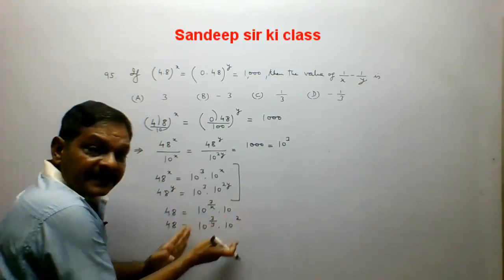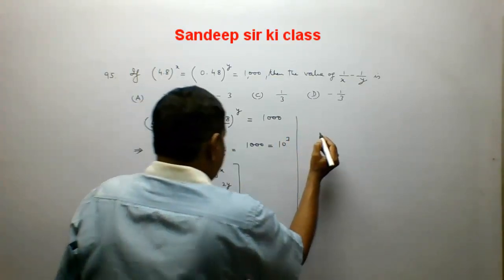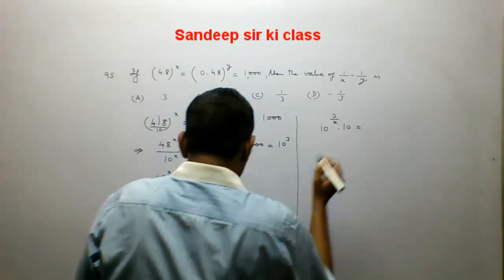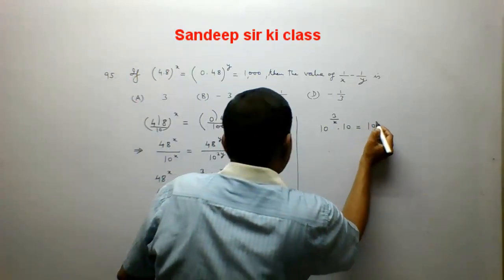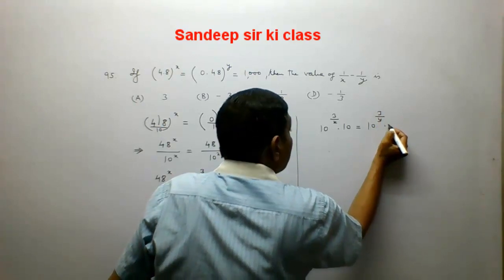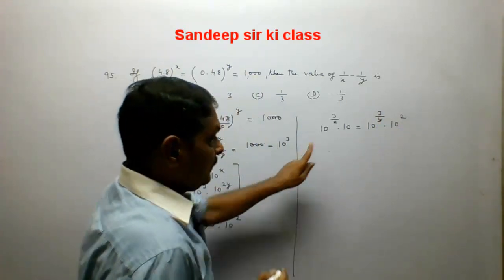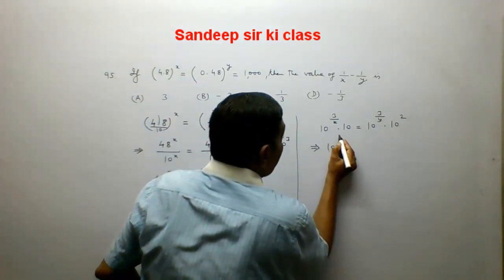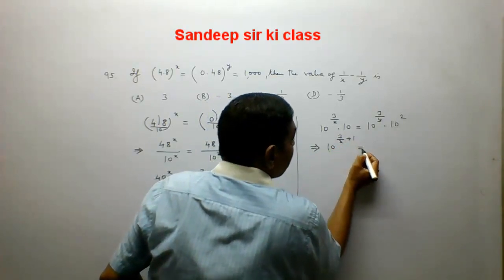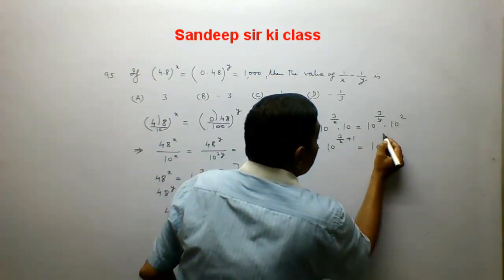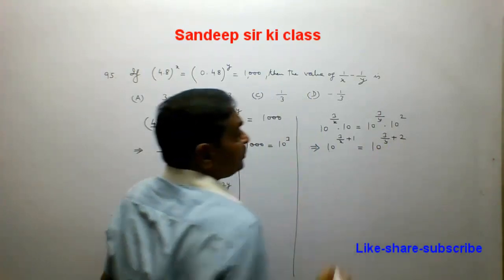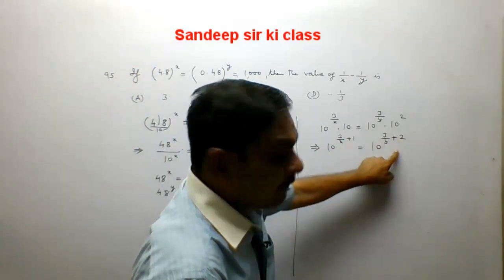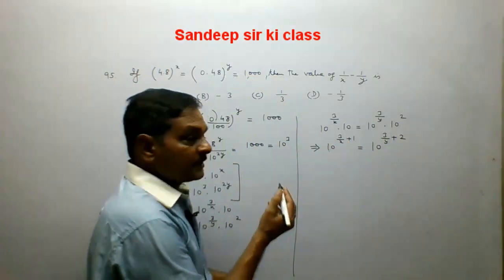Since 48 equals both expressions, the right-hand sides must be equal. So 10 to the power 3 upon x into 10 equals 10 to the power 1 into 10 to the power 2y. Adding the powers on each side (since bases are equal), this gives 10 to the power (3 upon x plus 1) equals 10 to the power (3 upon y plus 2). Since the bases are equal, the powers are equal.